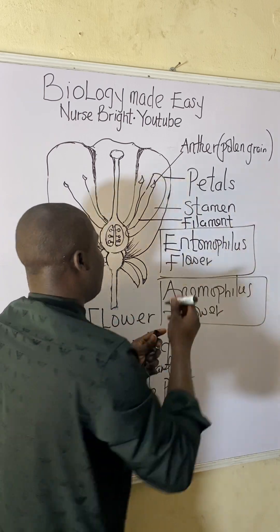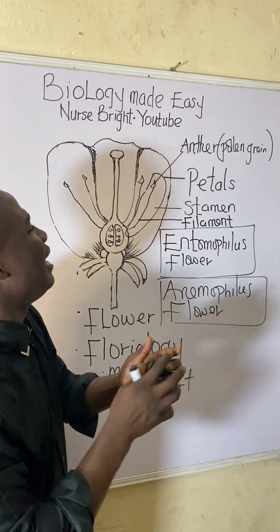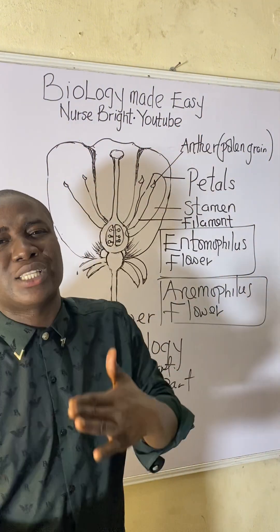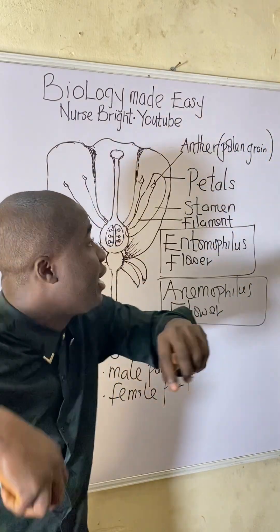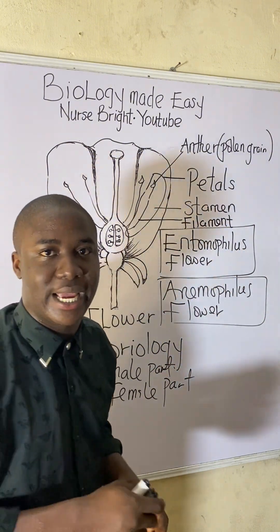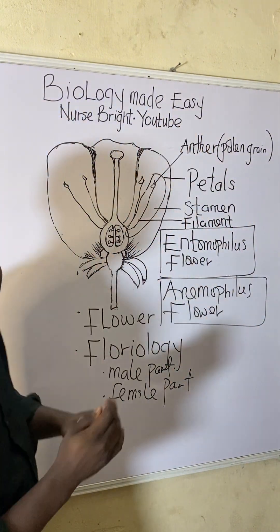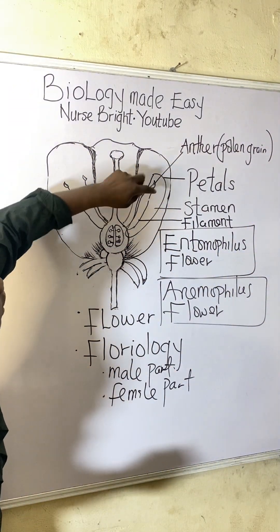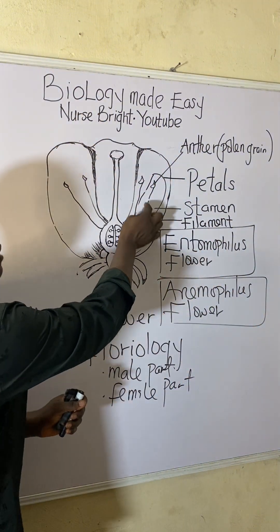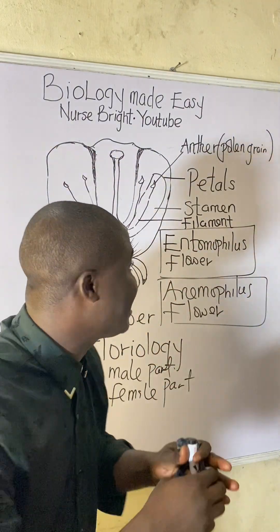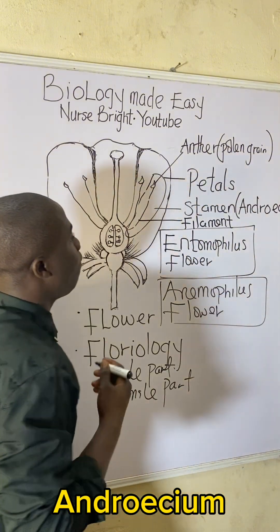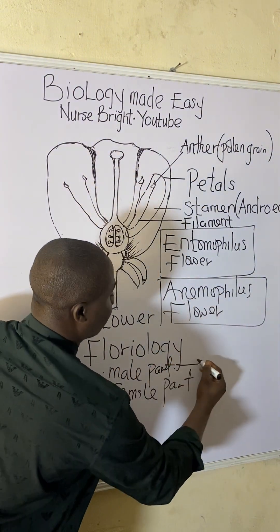The male part of a flower, called the stamen, has two parts: the anther and the filament. The anther produces the male gamete of a flower, which is called the pollen grain, while the filament holds the anther. A collection of different stamens gives rise to what we call the androecium.